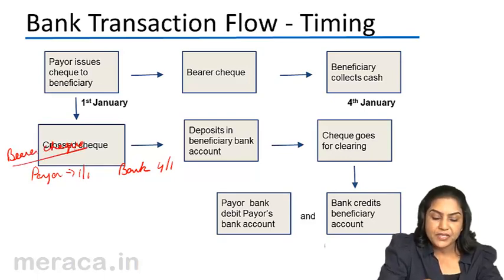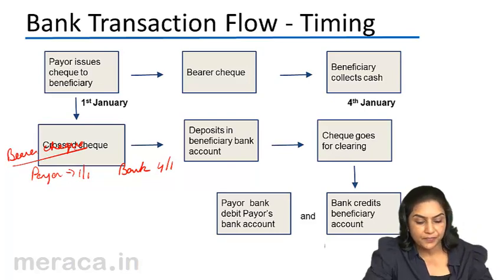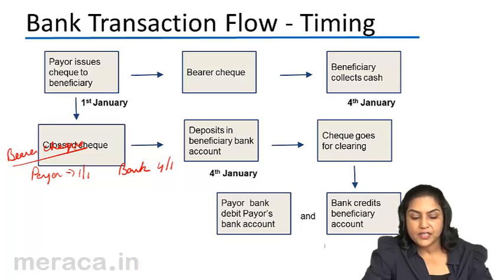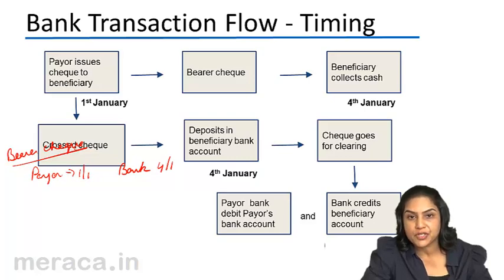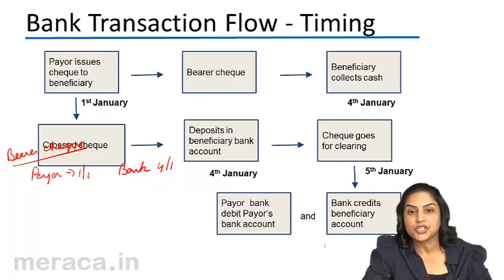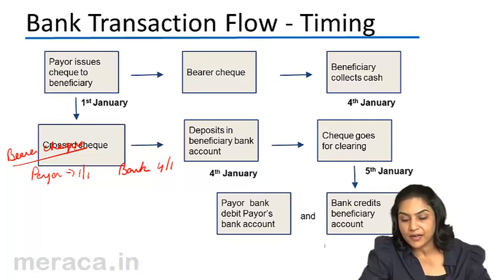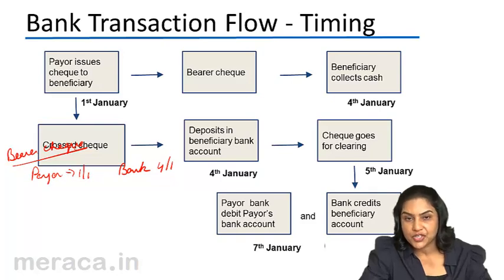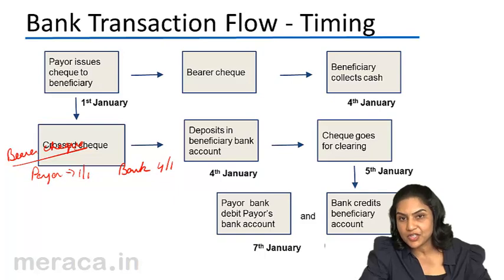What happens in the case of a cross check? In the case of a cross check, the payer has issued the check on 1st January. However, the beneficiary deposits it only on 4th January. Let us assume that the check goes for clearing on 5th January, and finally the check is cleared and the payer's bank is debited only on 7th January.